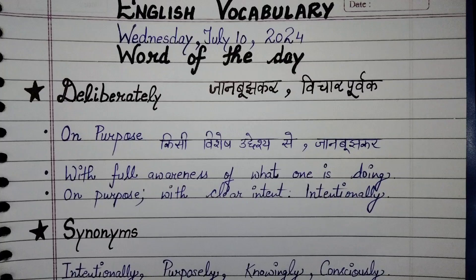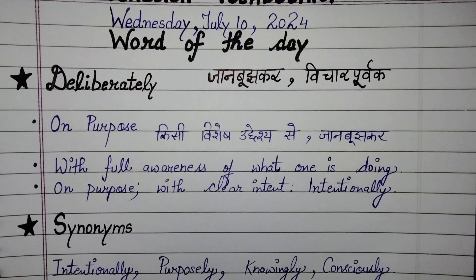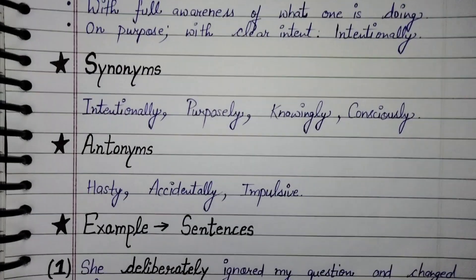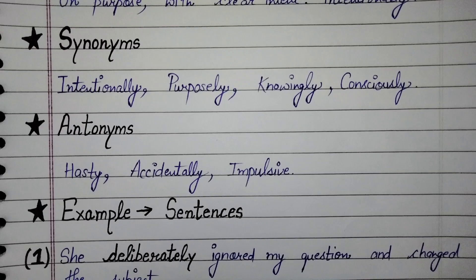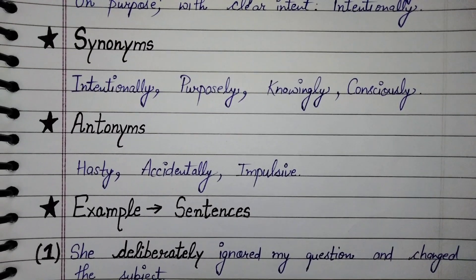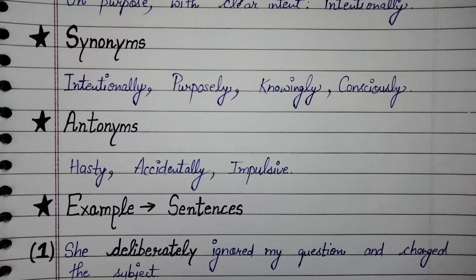So, 'Deliberately' ka Hindi meaning hota hai 'Jaan-Boojh-Kar'. Now, synonyms of 'deliberately' are: Intentionally, Purposely, Knowingly, and Consciously.